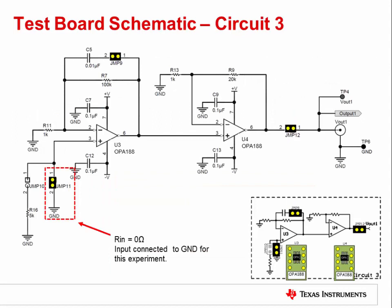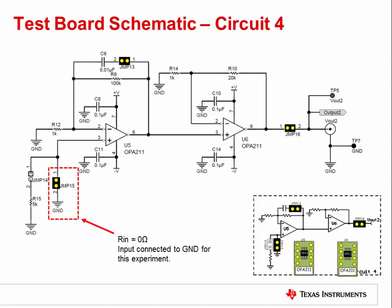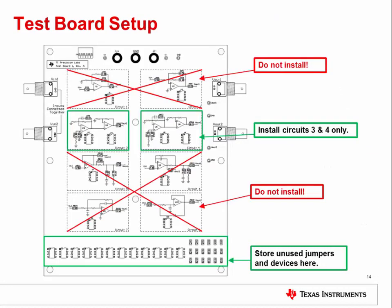This slide shows the full schematic for circuit 3 on the TI Precision Labs test board, which you will use to measure the effects of VOS and IB on the OPA188. This slide shows the full schematic for circuit 4, used to measure the effects on the OPA211. For the test board to function properly, only install jumpers and devices in circuits 3 and 4. Remove any jumpers or devices from unused circuits and store them in the storage area at the bottom of the test board.